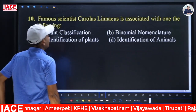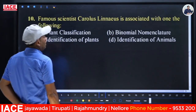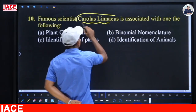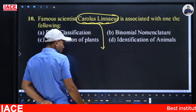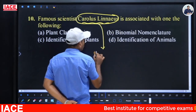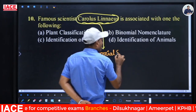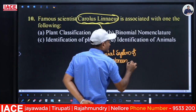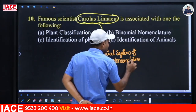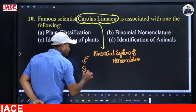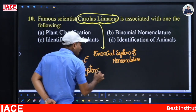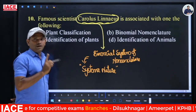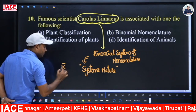Next: Famous scientist Carolus Linnaeus is associated with — (A) plant classification, (B) binomial nomenclature, (C) identification of plants, (D) identification of animals. Carolus Linnaeus is the man behind the introduction of the binomial system of nomenclature. He explained it in a book called Systema Naturae, which was published in 12 editions. The 10th edition was released in 1758.